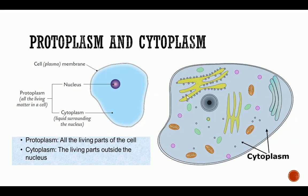Now we want to look at the protoplasm and make a clear distinction between protoplasm and cytoplasm. The protoplasm is all the living parts of the cell except the cell wall — the cell wall is not a living part. So the protoplasm includes the cell membrane or plasma membrane, the nucleus, and the cytoplasm. The cytoplasm, on the other hand, is everything within the cell with the exception of the nucleus.